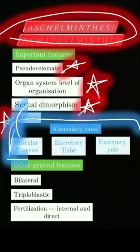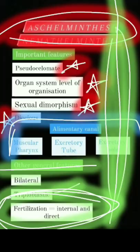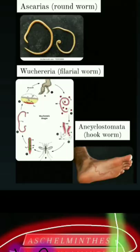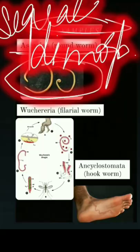Other features include bilateral symmetry, triploblastic organization, and internal fertilization. The first example is the roundworm - female is larger and male is smaller. This condition is called ascariasis. Another example is the filarial worm.